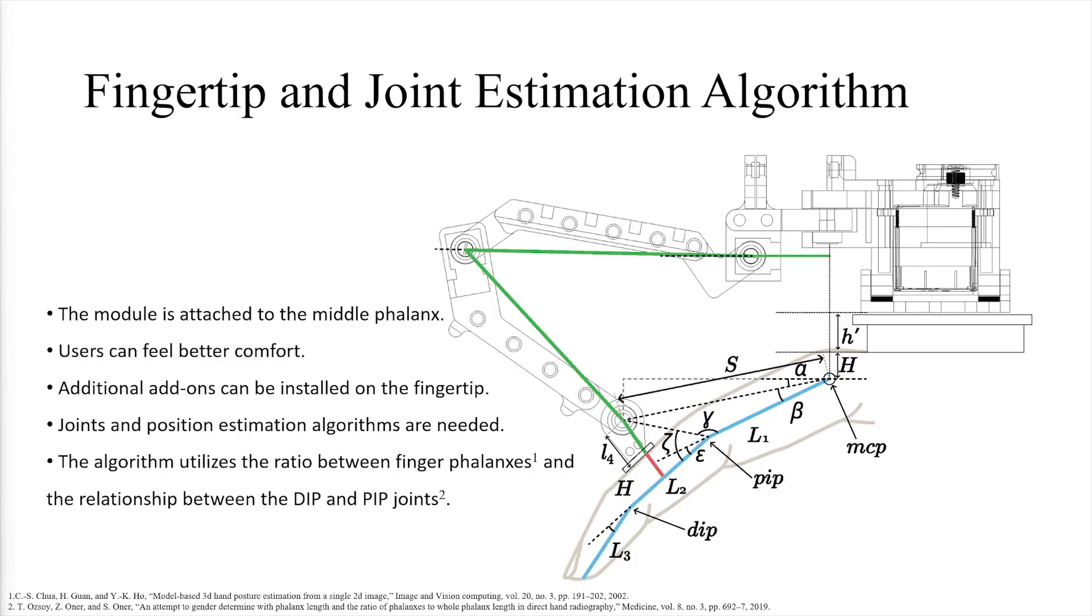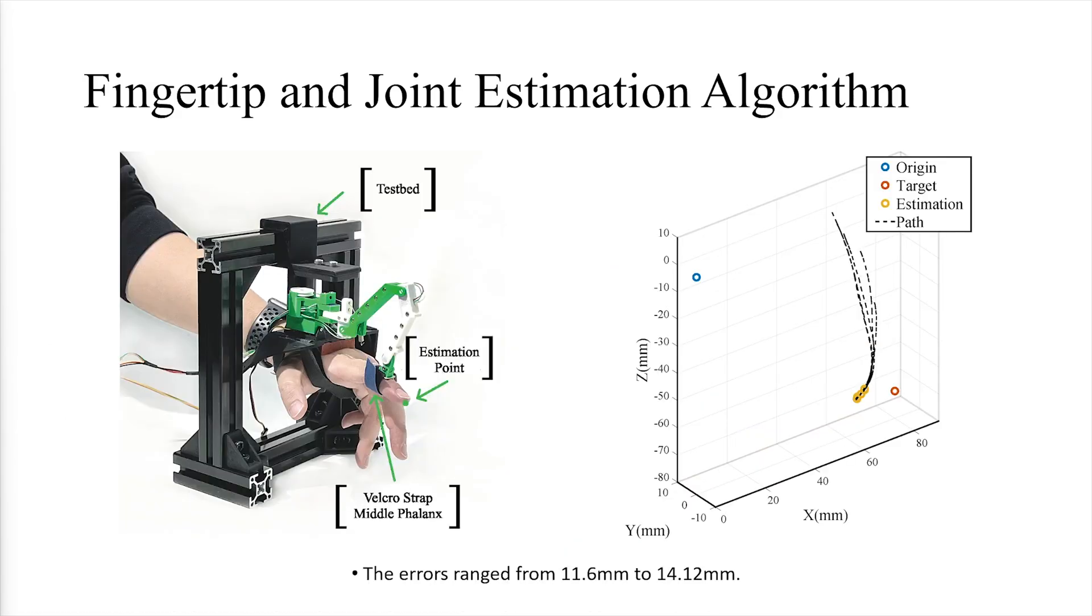The haptic module is attached to the middle phalanx for a comfortable fit. Additional add-ons can be installed on the fingertip to enhance functionality. Position estimation algorithms are used, relying on the ratio between finger phalanges and the relationship between the DIP and PIP joints to ensure accurate movement tracking.